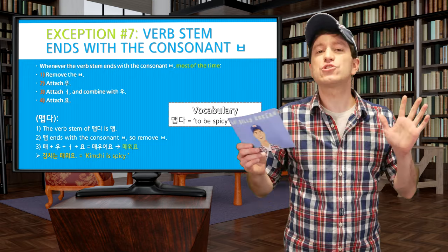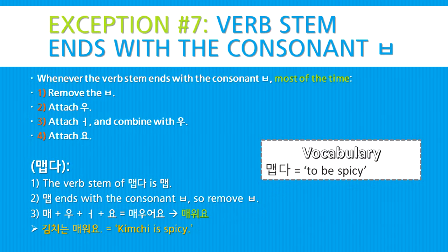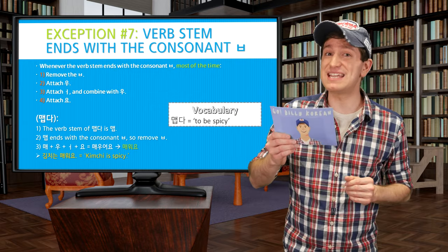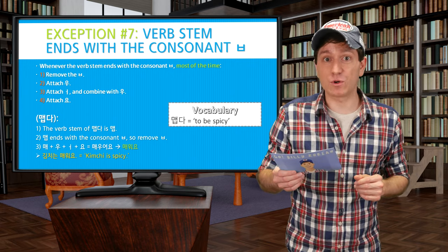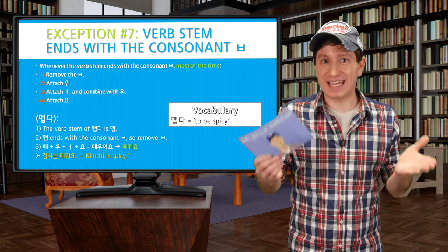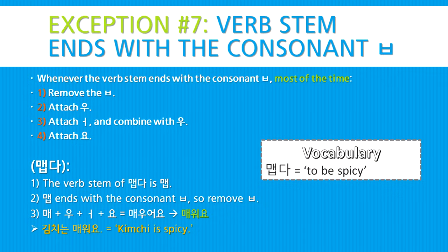Our next exception is one of the most common: whenever the verb stem ends with the consonant ㅂ (비읍). Remove the ㅂ. Attach the whole syllable 우. Then attach 어 and combine it with 우, giving you 워. Finally attach 요. For example, 맵다 (to be spicy): verb stem is 맵. Remove the ㅂ, leaving 매. Attach 우, then 어 combined: 매워. Add 요: 매워요. Sentence: 김치는 매워요 — Kimchi is spicy.